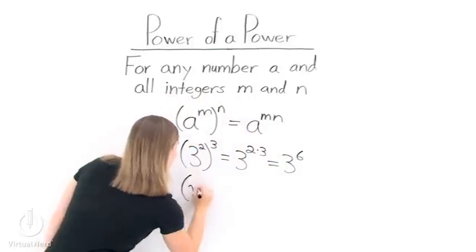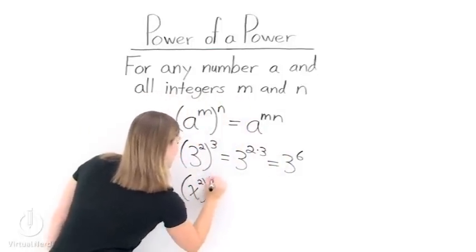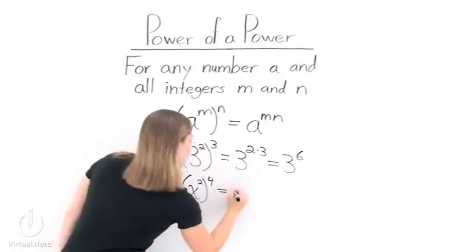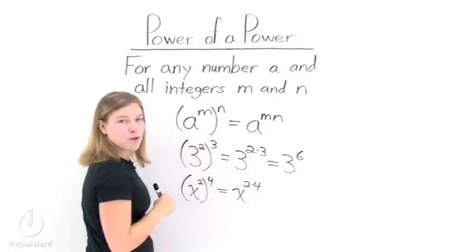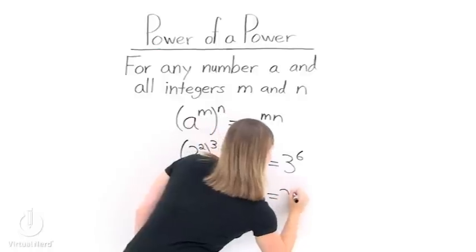If we have x squared and take that to the fourth power, we can take x to the 2 times 4 power, or x to the eighth.